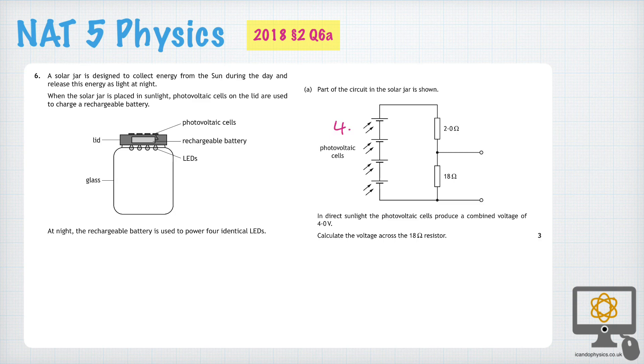So we could write here that there is 4.0 volts provided by this battery pack. That 4 volts has to be shared between the two resistors, the 2 ohm resistor at the top and the 18 ohm resistor at the bottom. And the question is what is the voltage across the 18 ohm resistor at the bottom?